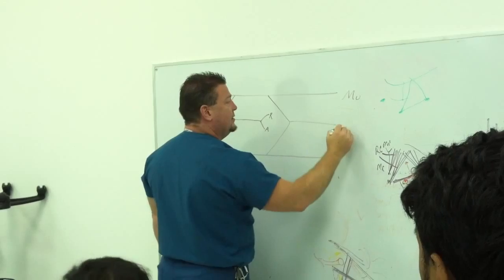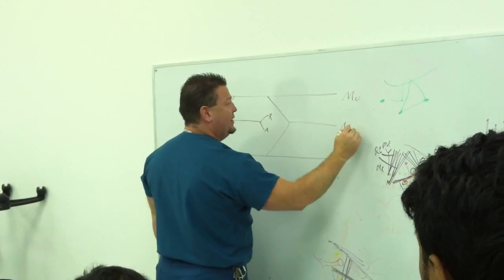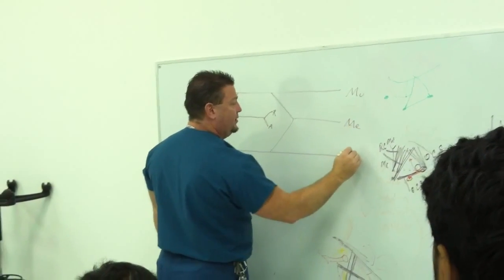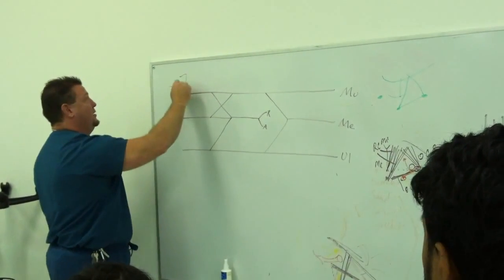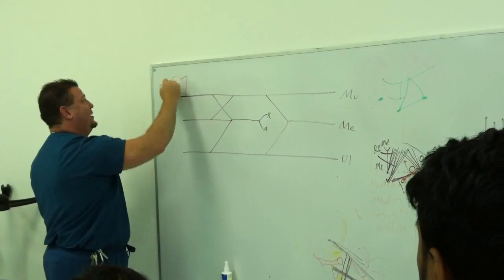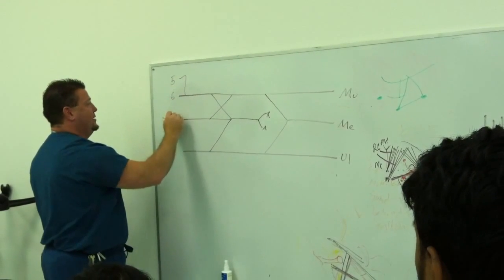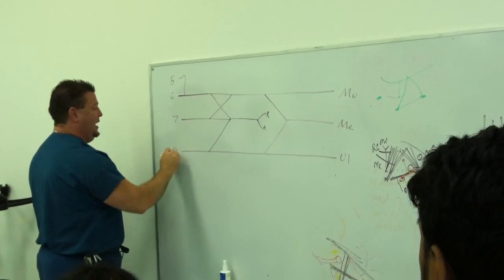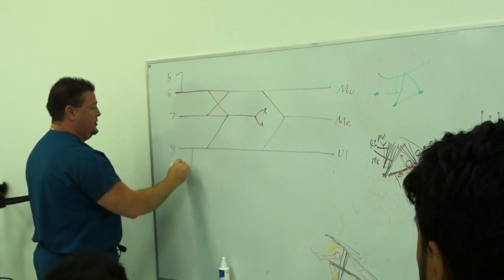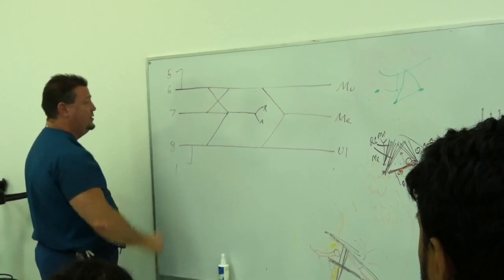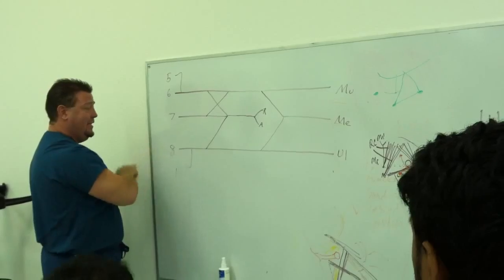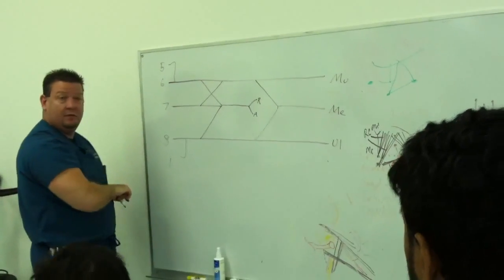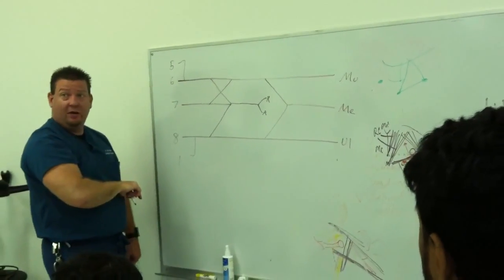Musculocutaneous. It's median. Ulnar. Okay? Then I did 5, 6, 7, 8, 1 — so C5, C6, C7, C8, T1. You with me so far?